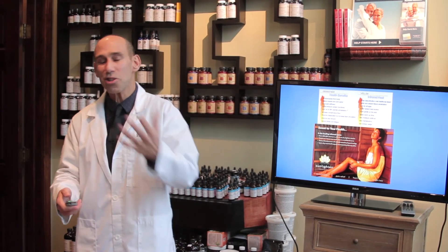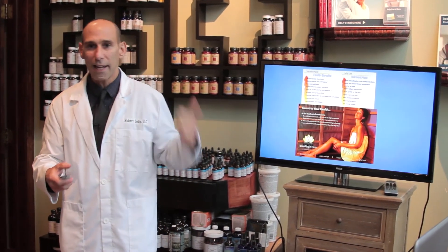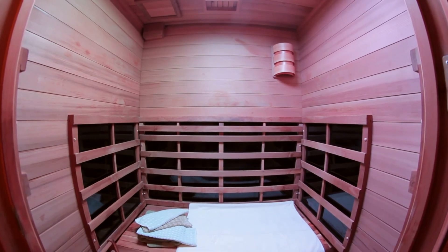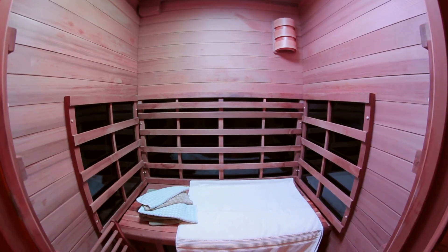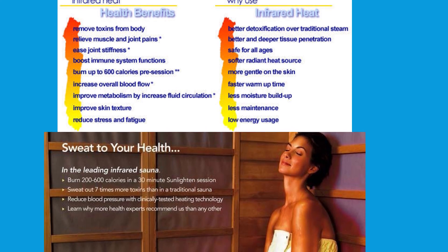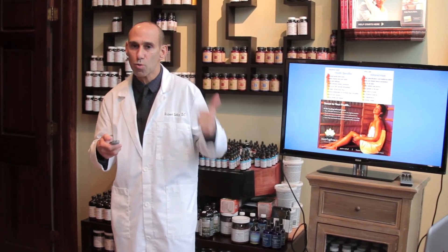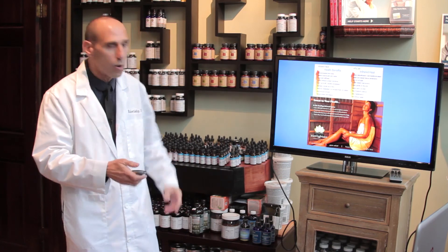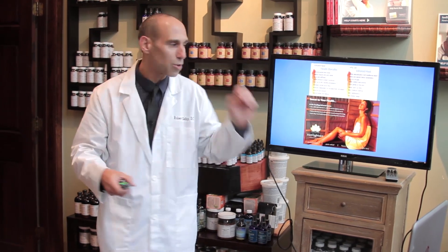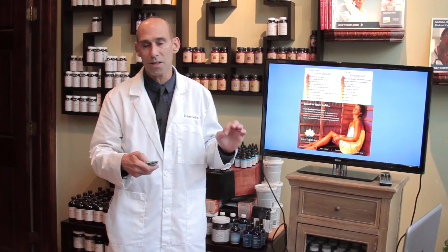Another key strategy — especially if you feel it in the muscles and bones — is to get heat; you want to sweat this thing out. Hit the infrared sauna. When you hit the infrared sauna, you're inducing fever, and that raised body temperature can kill the viruses and other pathogens. When that cold flu is setting in, you always want to be sweating. Keeping the channels of detoxification open gets things out through the skin, taking stress off the lungs, kidneys, colon, and bowels. Absolutely hit the sauna, especially when the flu is in the muscles and bones.